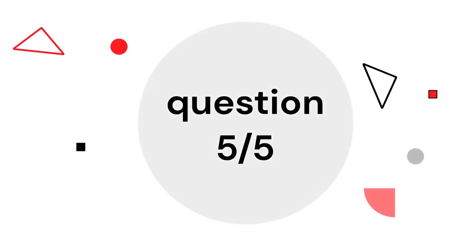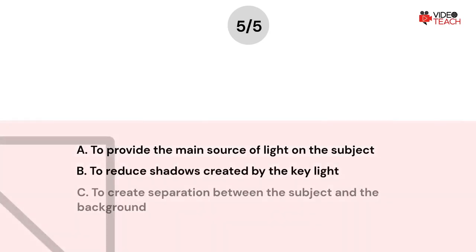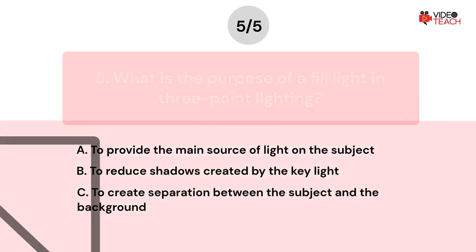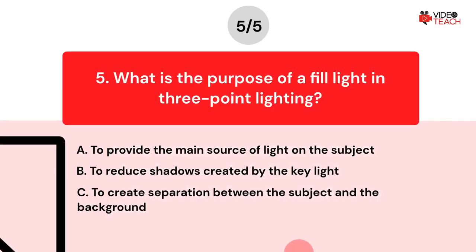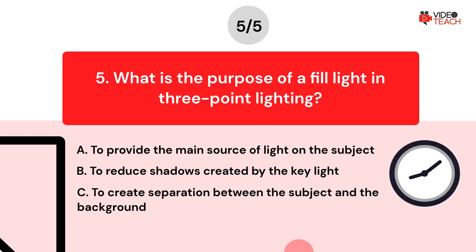Question number five. What is the purpose of a fill light in three-point lighting? Option A: To provide the main source of light on the subject. Option B: To reduce shadows created by the key light. Option C: To create separation between the subject and the background. Now you have about 15 seconds to think about your answer.